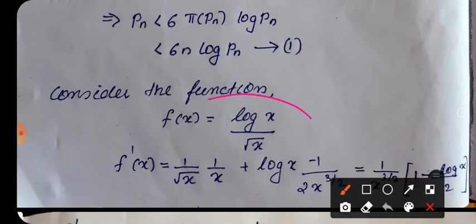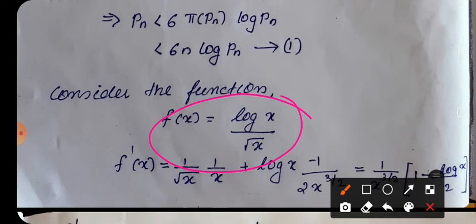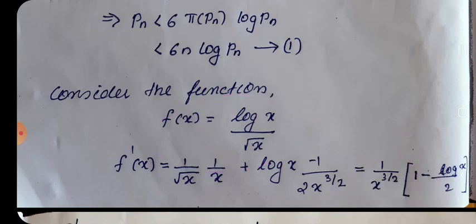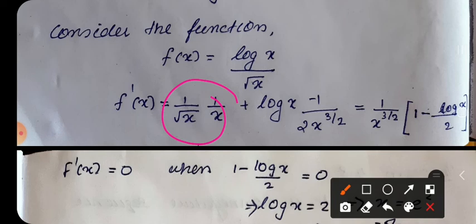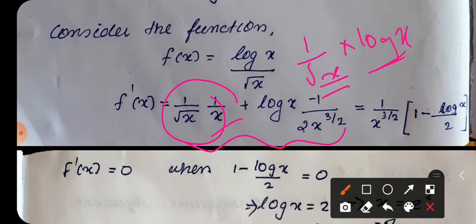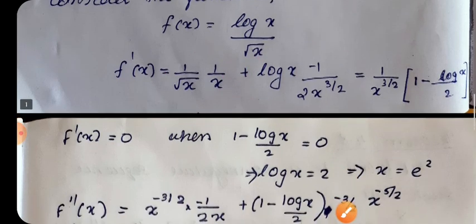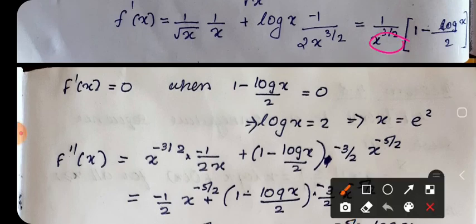To bound log(pn), we analyze the function f(x) = log(x)/√x. We compute the first derivative: f'(x) = (1/√x · log(x) applied with quotient rule) yielding critical points where the numerator is zero. Setting f'(x) = 0 gives log(x) = 2, so x = e².